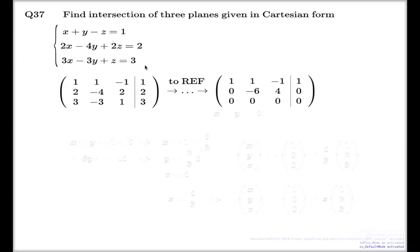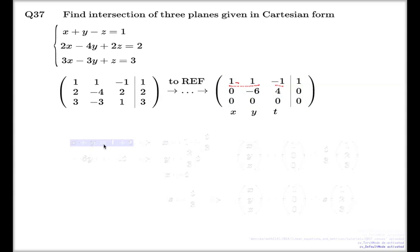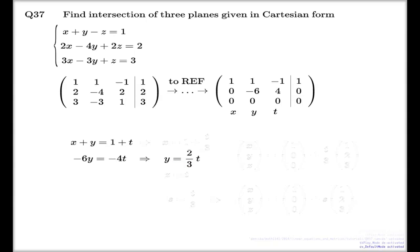Here are my variables x, y, z — I'll call the parameter t this time. Back-substituting from the first line of the row echelon form gives x plus y equal to 1 plus t, with the parameter moved to the right-hand side. The second line is even simpler. Back-substitution gives y equal to 2t/3, then x equal to 1 plus t/3. And z is simply t — that's the choice of parameter.